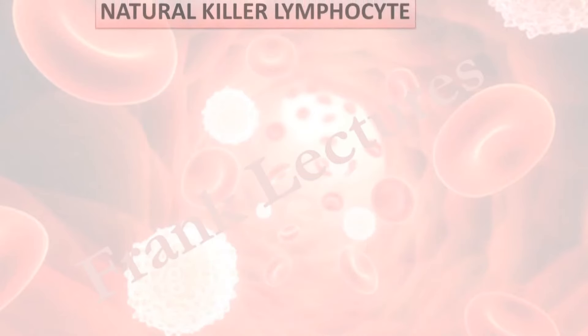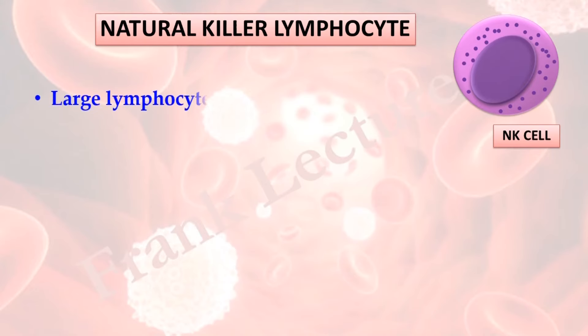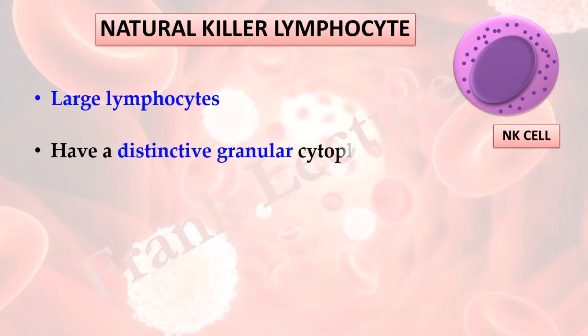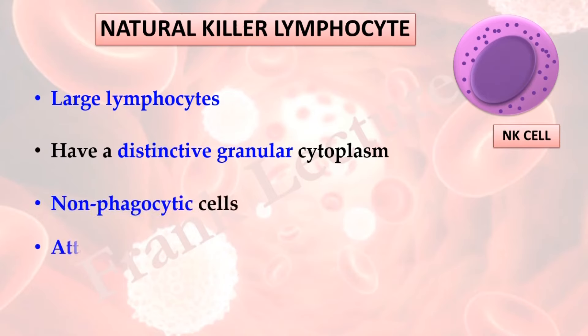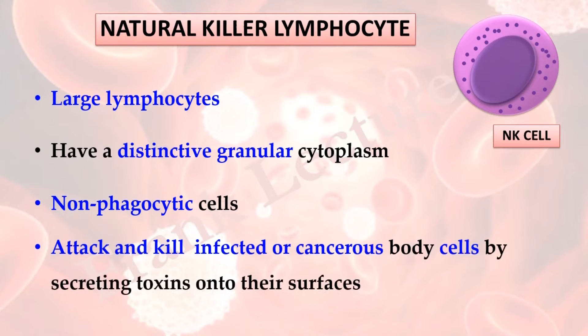Natural killer lymphocytes, abbreviated as NK cells, are large lymphocytes. They have a distinctive granular cytoplasm. They are non-phagocytic; they attack and kill infected or cancerous body cells by secreting toxins onto their surfaces.